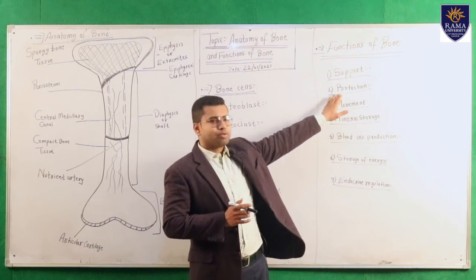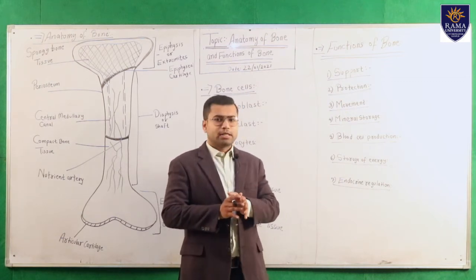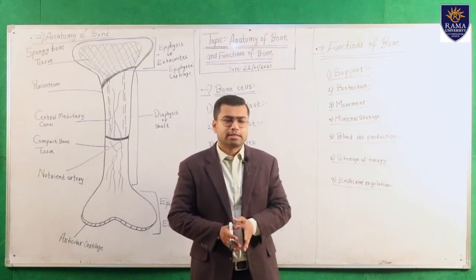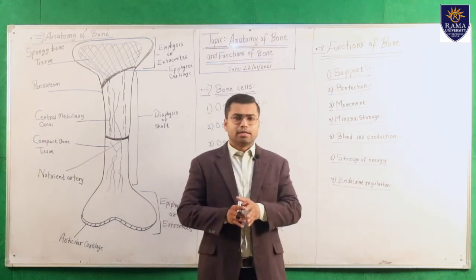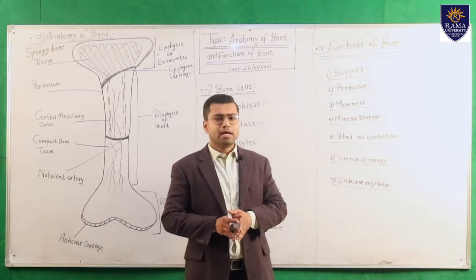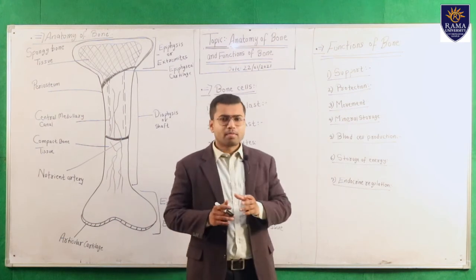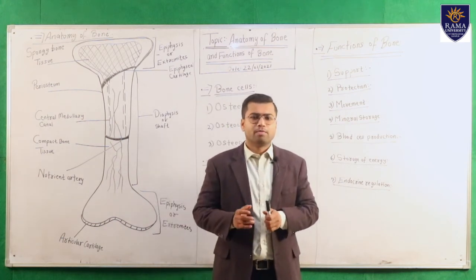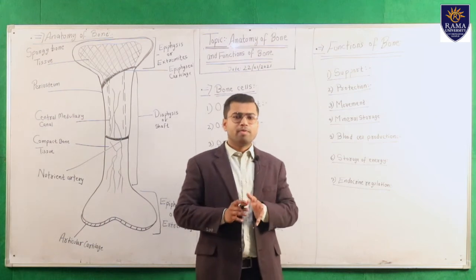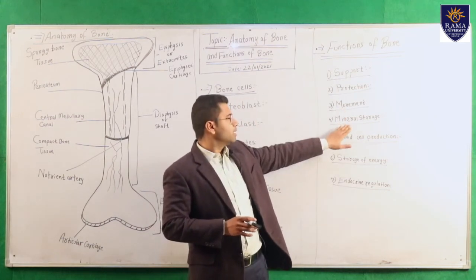The second function is protection — bone helps protect internal organs. For example, the lungs and heart are protected by the ribs. The third function is movement — any movement of our body parts, such as hands or legs, occurs with the help of bone.